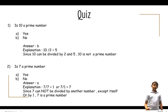Here are the answers. For question 1, the answer is b. 10 can be divided by 2, but a prime number can only be divided by one and itself, so 10 is not a prime number. For question 2, the answer is a. 7 cannot be divided by any other number except itself or by one, so 7 is a prime number.